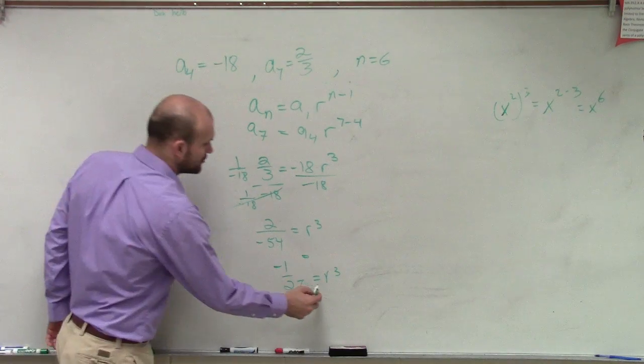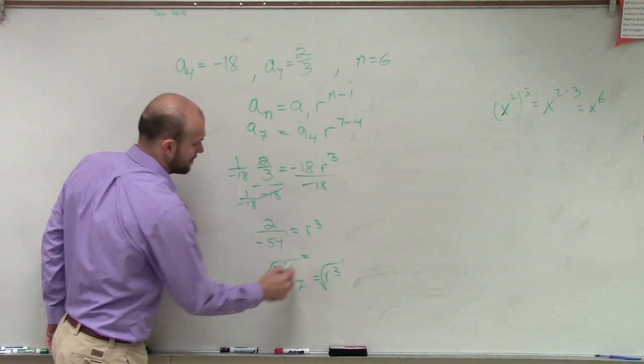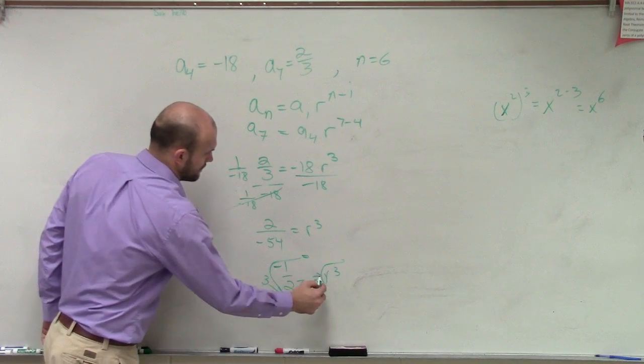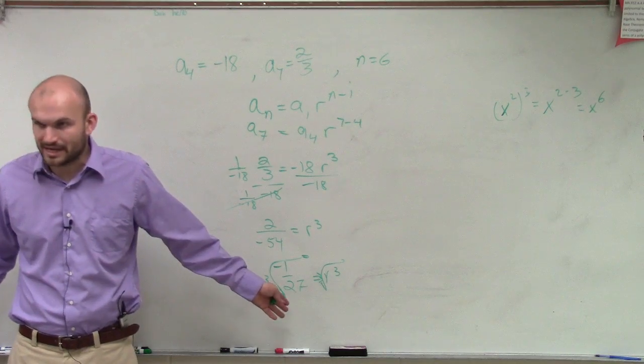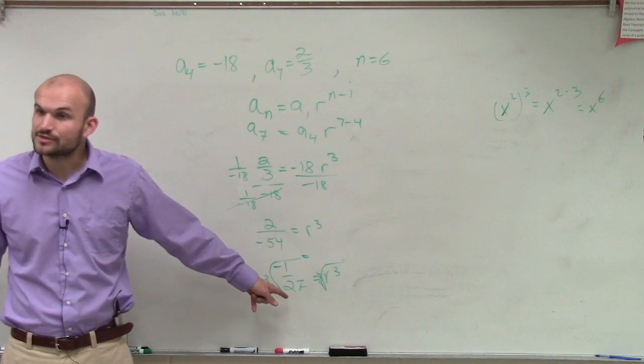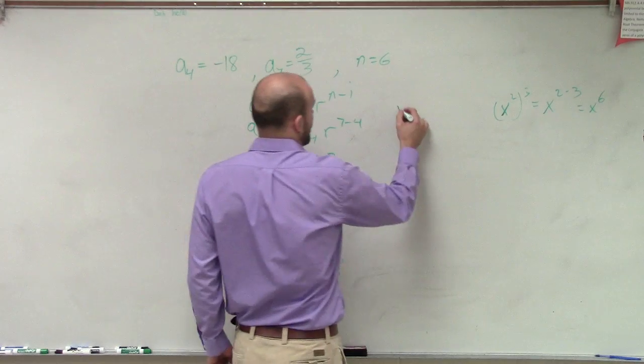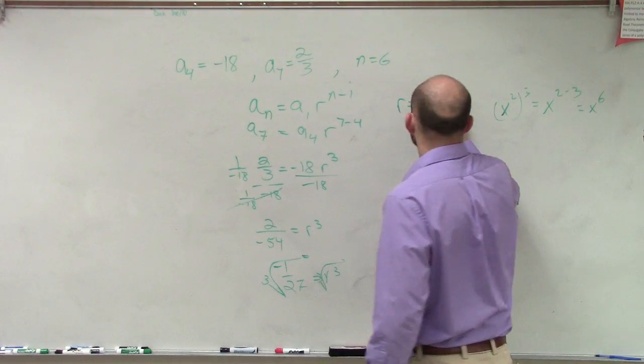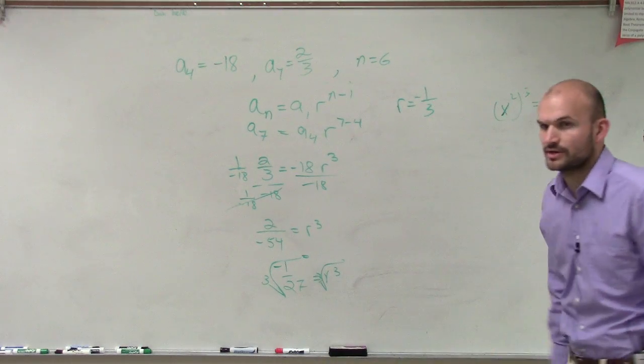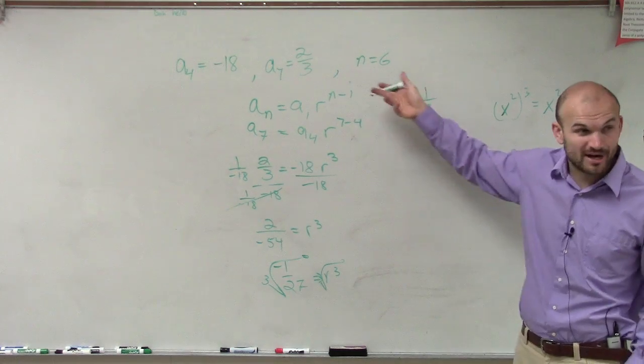Then if I take the cube root of that, well, the cube root of negative 1 is just going to be negative, right? And the cube root of 27 is 3. So therefore I get r equals 1, sorry, negative 1/3. So now I've figured out what r is.